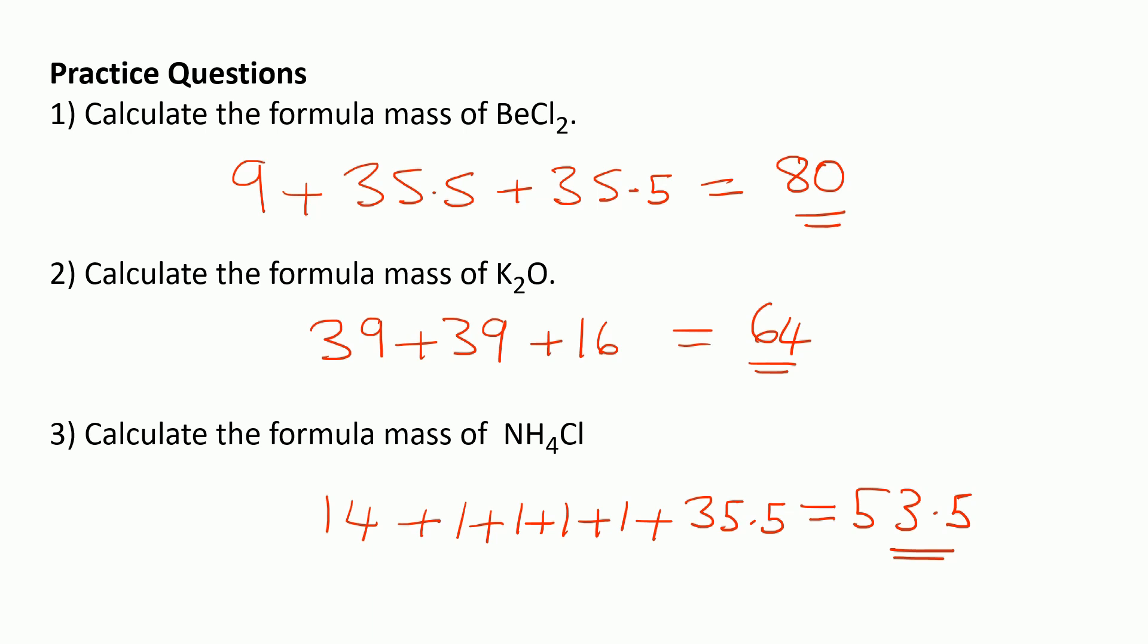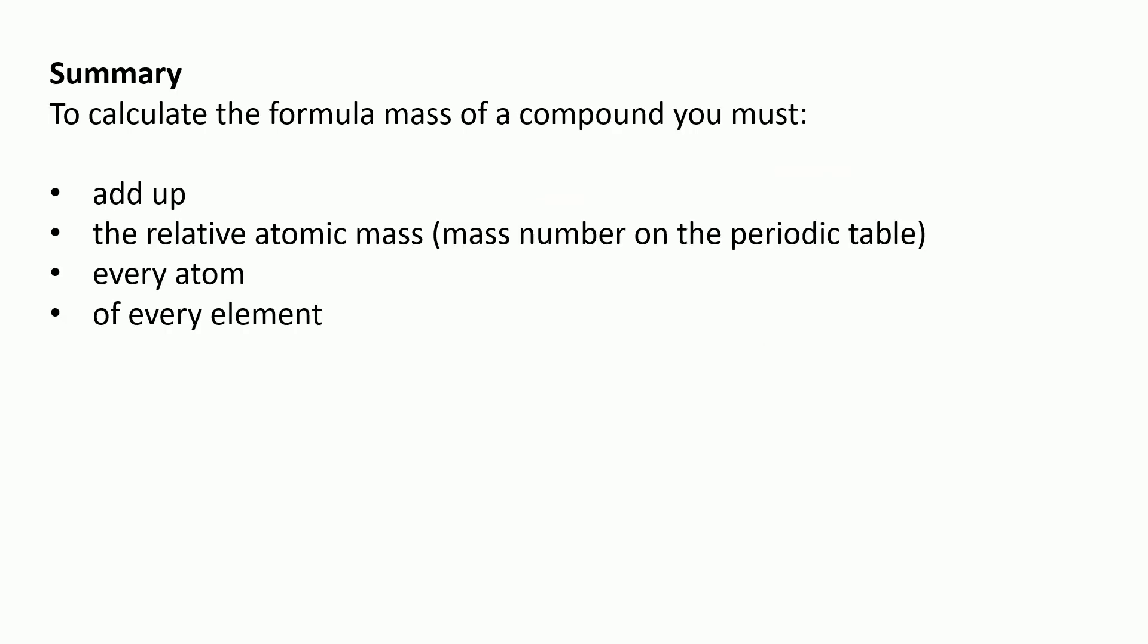To summarize, if you want to calculate the formula mass of a compound, you must add up the relative atomic mass—that's the mass number on the periodic table—of every atom of every element. Make sure you can remember this description of how to work out the formula mass for your exam.